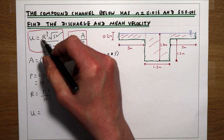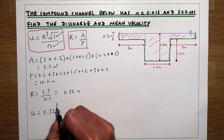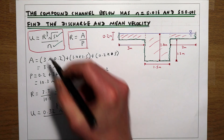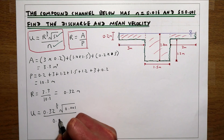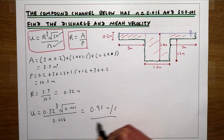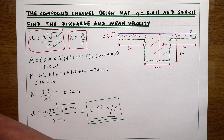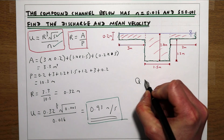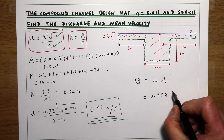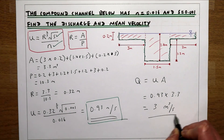Now we have our area and wetted perimeter, so we can work out the hydraulic radius: cross-sectional area divided by wetted perimeter, which gives a hydraulic radius of 0.32 m. Plugging into Manning's equation — hydraulic radius 0.32 to the power of 2/3, times the square root of slope 0.001, divided by Manning's n of 0.016 — gives a velocity of 0.93 m/s. Using continuity, Q = velocity × area = 0.93 × 3.3 = 3.0 m³/s.